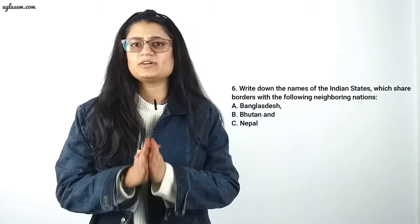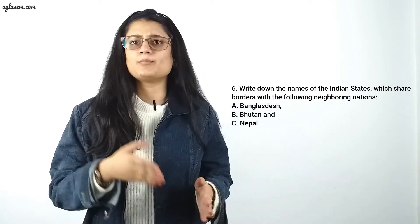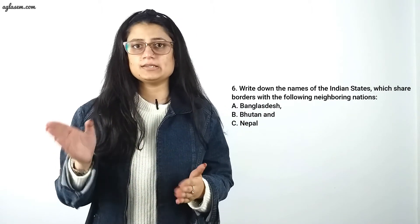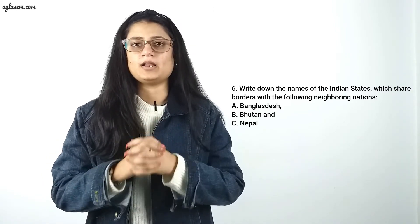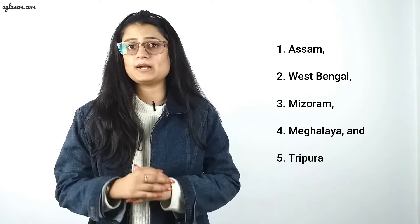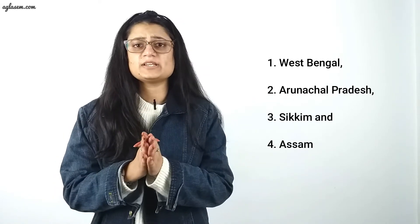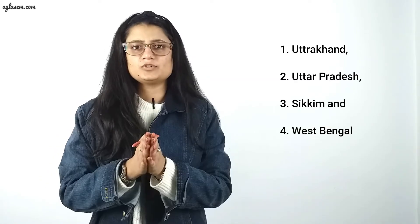Question number six: Write down the names of the Indian states which share borders with the following neighboring nations. For Bangladesh, the states are Assam, West Bengal, Mizoram, Meghalaya, and Tripura. The Indian states that share a border with Bhutan are West Bengal, Arunachal Pradesh, Sikkim, and Assam. For Nepal, the states are Uttarakhand, Uttar Pradesh, Sikkim, and West Bengal.